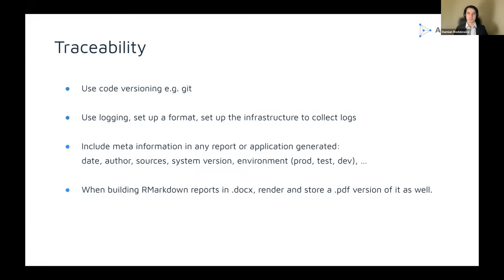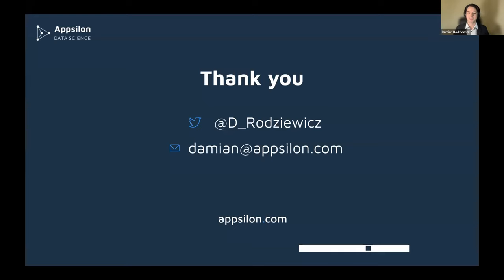Very quickly on traceability: Git itself provides a very good history of how your solution has been implemented. But you should be logging a lot of information directly from your application, R Markdown file, or any other R solution. There are good packages for providing structured logs, and you need to set up separate infrastructure to collect and store them. You need to include all meta information in any report or application generated — data, author, sources, system version, environment, and many others. Also, whenever you are building R Markdown reports in Word document format, render and store a PDF version as well so you can retain it for historic purposes. Hopefully this was useful — happy to discuss further during the questions.